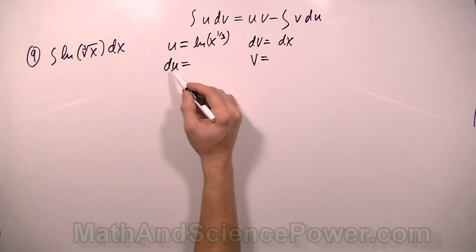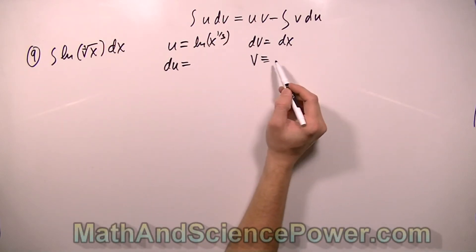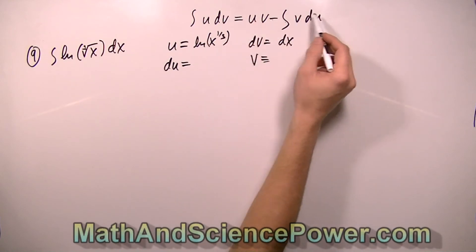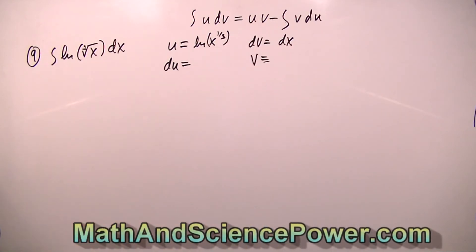So take a moment, see if you can find du, v, and plug your numbers into the formula, and see if you can evaluate the integral, natural logarithm of the cubed root of x dx. And when we come back we'll compare our answers and I'll take you through the rest of the integral.